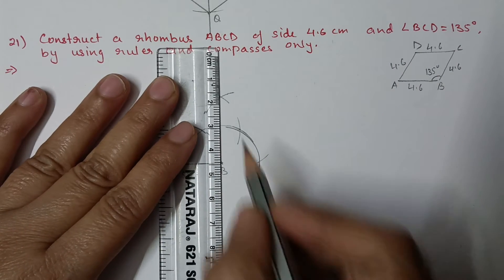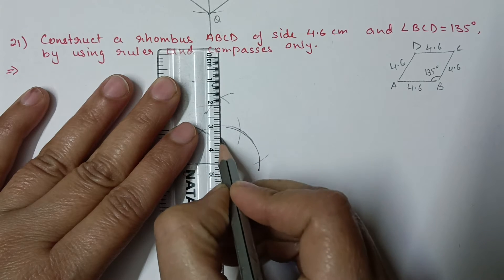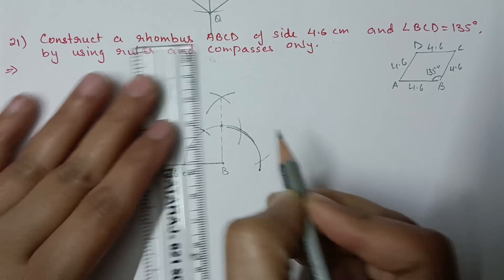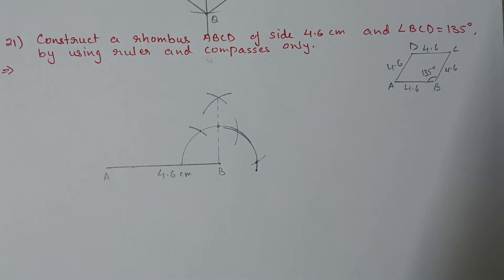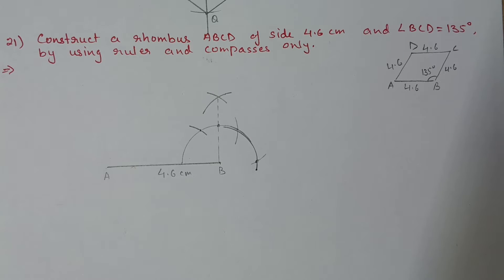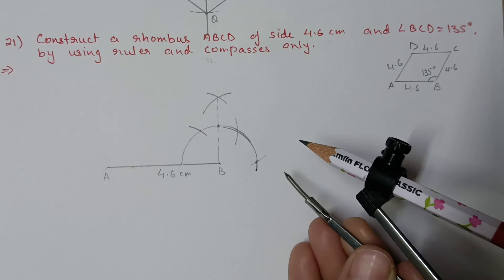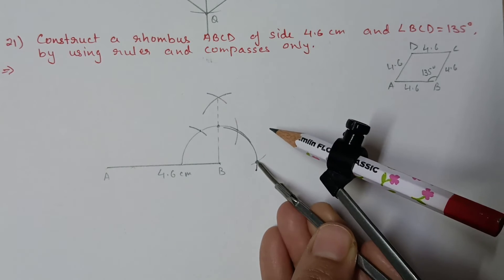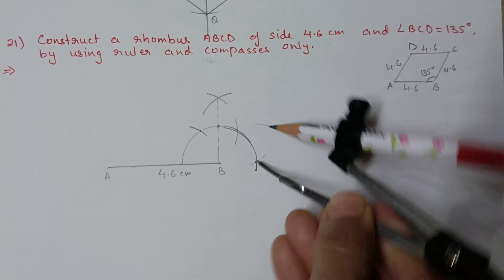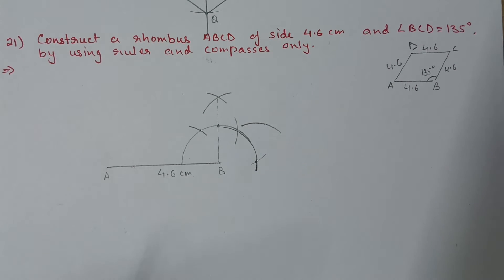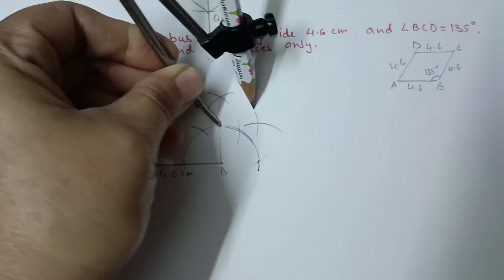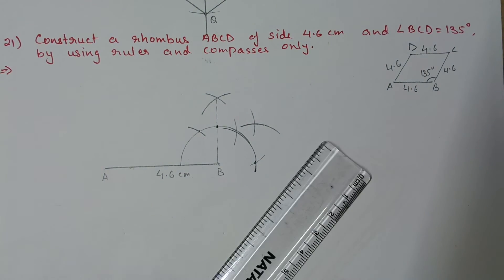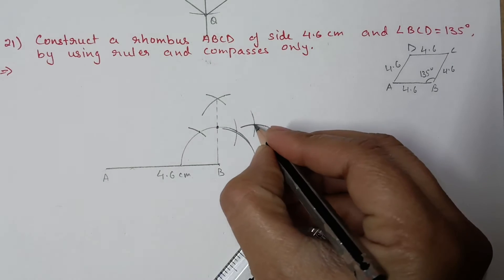Draw 90 degrees with a dotted line since it is not the final angle. 135 degrees comes between 90 and 180 degrees — it is like 45 degrees but in the opposite direction. Put one arc from 180 degrees and one arc from 90 degrees; where they intersect is 135 degrees.